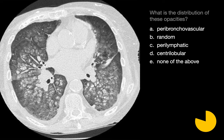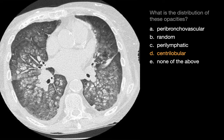How would you best characterize the distribution of alveolar opacities in this patient? The best answer is D, centrilobular. The opacities generally spare the regions immediately adjacent to pulmonary vessels — which would be a hallmark of a peribronchovascular pattern — and also spare the lung margins along the ribcage and fissures, which would be a hallmark of a perilymphatic pattern. Based on the size and distribution of secondary pulmonary lobules, each opacity appears centered upon a secondary pulmonary lobule.